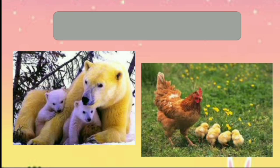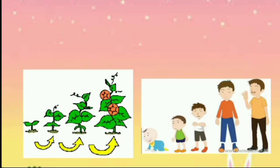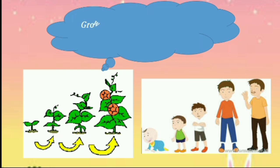Look at the animal and their babies. It's called reproduce. Reproduce is the process of having babies. Can you see the picture? It is called grow. Grow is to become bigger and larger.